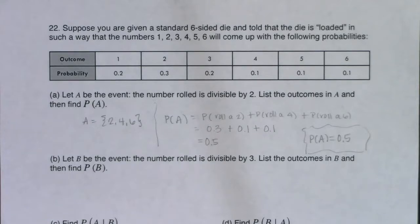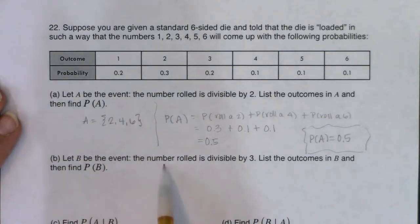So with that, let's take a look at part B. It's got the same type of setup. So this time let B be the event that the number rolled is divisible by 3. Okay, list the outcomes in B and then find the probability of B.